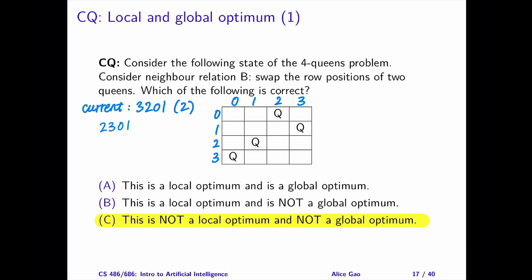If we swap the row positions of the first and the third queens from the left, we get 0231. Let's write out all of the six neighbors.